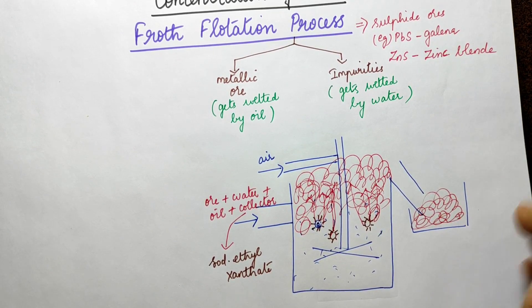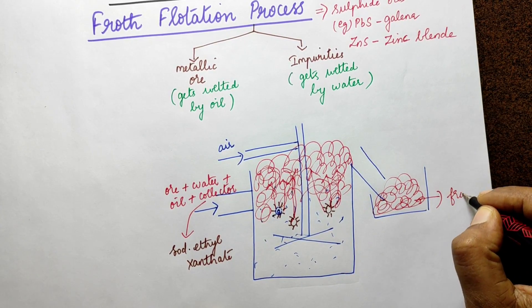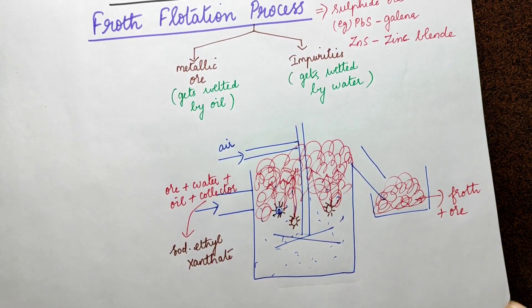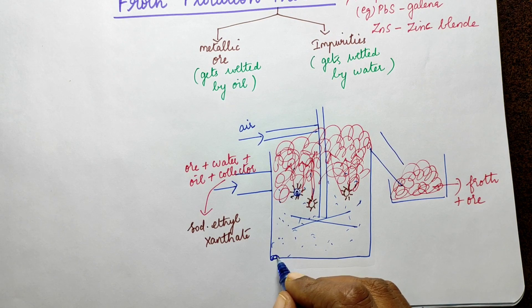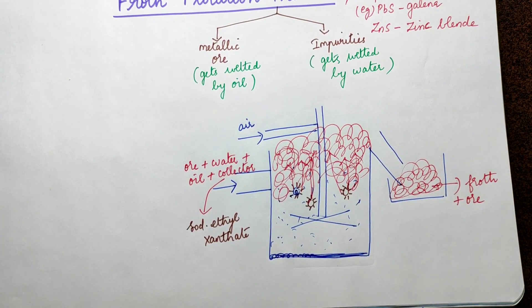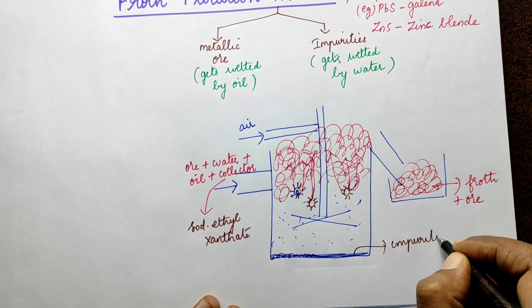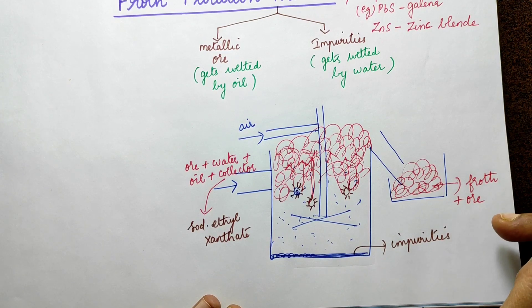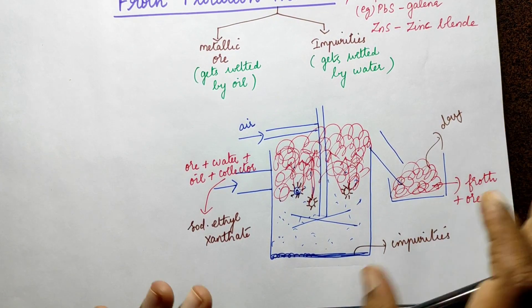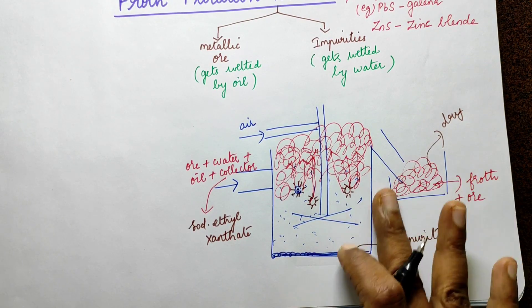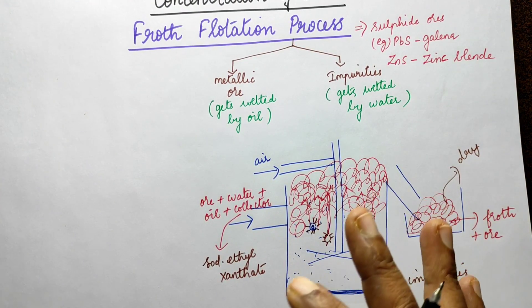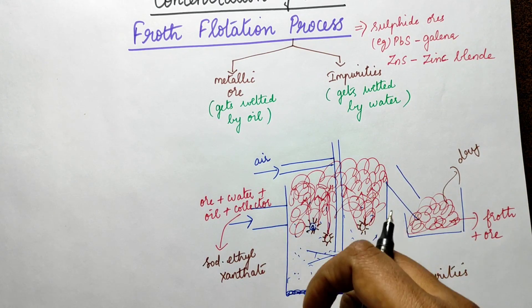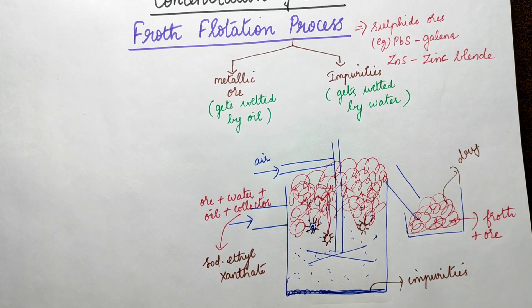What is collected is froth. The froth is collected — this is the method of froth flotation. The ore particles attached to air bubbles rise to the top as froth and are collected. The method of froth is very important for concentrating sulfide ores.